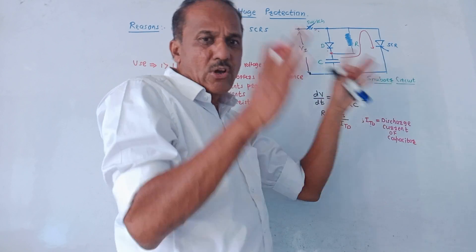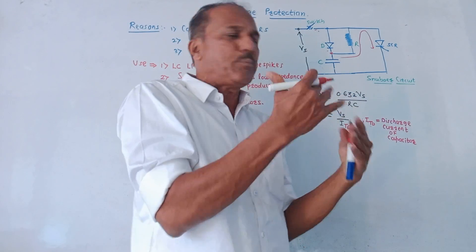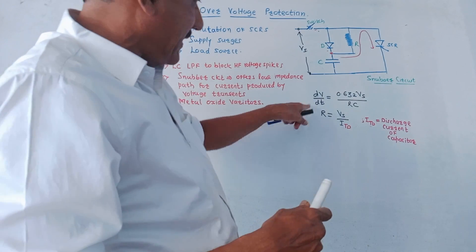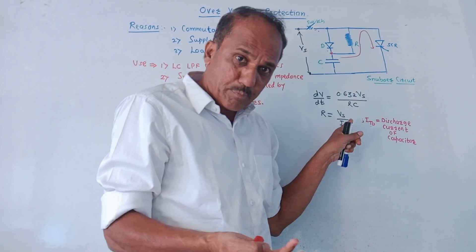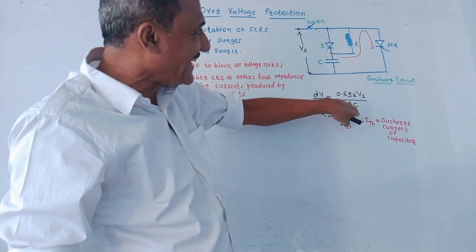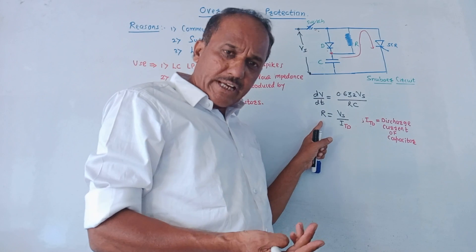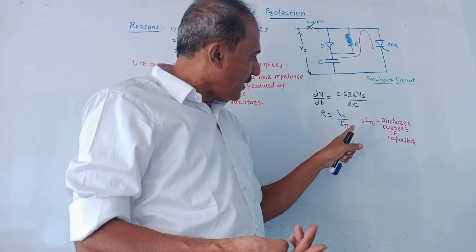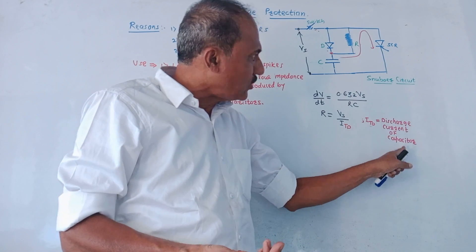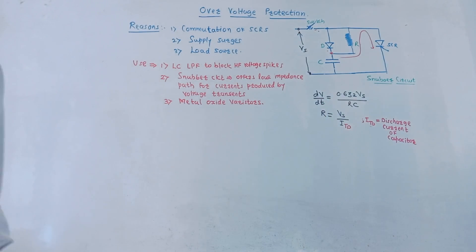This is called the snubber circuit, which avoids sudden changes or spikes of voltages and protects the circuit. As far as the designing is concerned, the value of dv/dt, that is the rate of change of voltage across the SCR, is 0.632 times Vs divided by RC. R is the value of resistance, C is the value of capacitance. The value of resistance is calculated using the formula: R = Vs / I_Td, where I_Td is basically the discharge current of the capacitor.